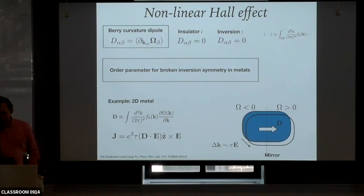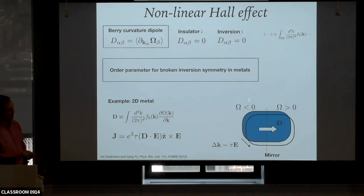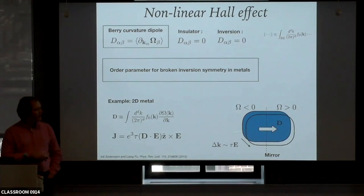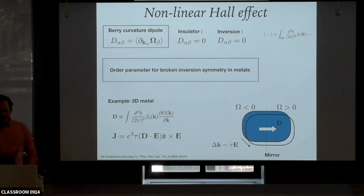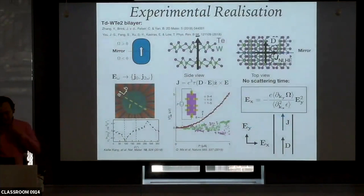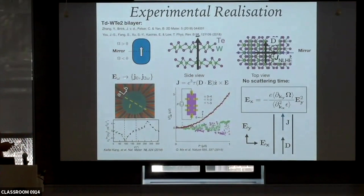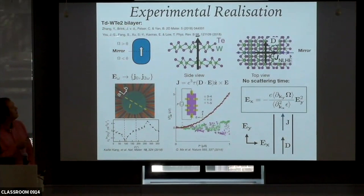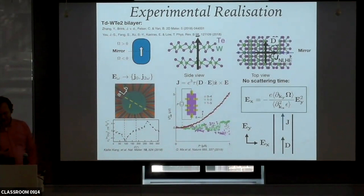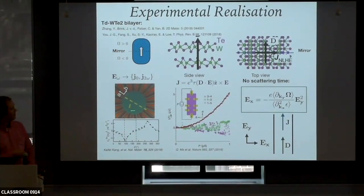The general condition for it to be nonzero is that you need a metal that breaks inversion. For example, in 2D, if you have a Fermi surface cut by a mirror plane, the Berry curvature will be forced to change sign, and you can think of this Berry dipole as a vector pointing along the gradient of the Berry curvature. It's a form of order parameter for broken-inversion-symmetry metals. The effect was recently experimentally discovered by two groups—Kin Fai Mak and Pablo Jarillo-Herrero—independently and simultaneously, following some initial first-principles calculations.